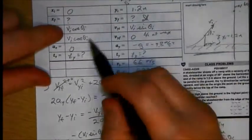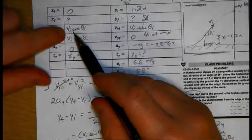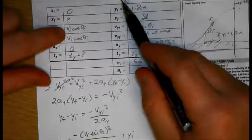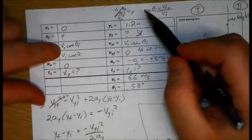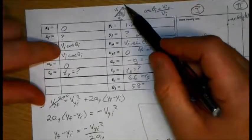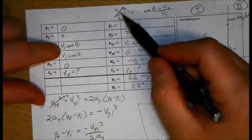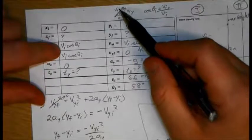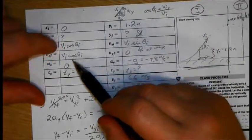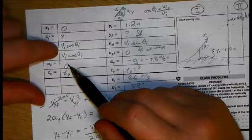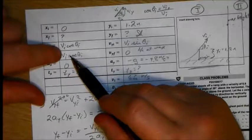The initial velocity in the x direction is vi cosine theta initial. That's because we have this initial velocity vector here. It has an x component, a y component, and cosine gives you the adjacent leg of that vector. So vi cosine initial. Since acceleration is zero, the final component is the same.